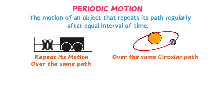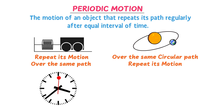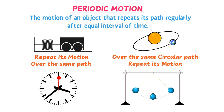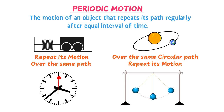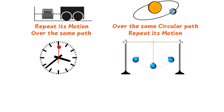Secondly, the motion of the Earth around the Sun — the Earth moves over the same circular path and repeats its motion after equal intervals of time, so it is also periodic motion. Thirdly, motion of the hands of a clock, and fourthly, motion of the pendulum — these are different examples of periodic motion because they repeat their respective motion over the same path after equal intervals of time.